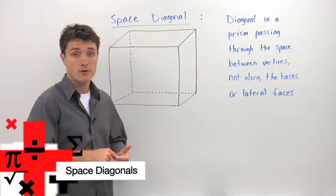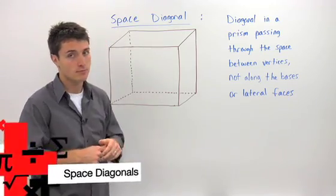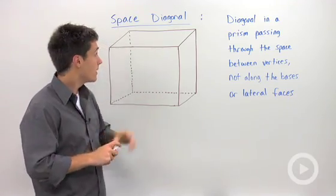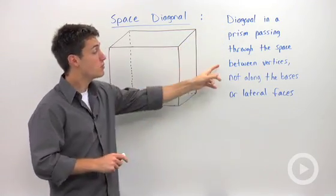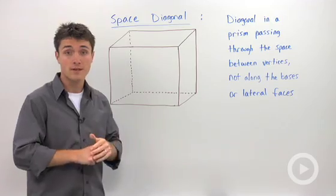One application of the Pythagorean Theorem is a space diagonal. A space diagonal is the diagonal that passes through space between vertices, not along the bases or the lateral faces.